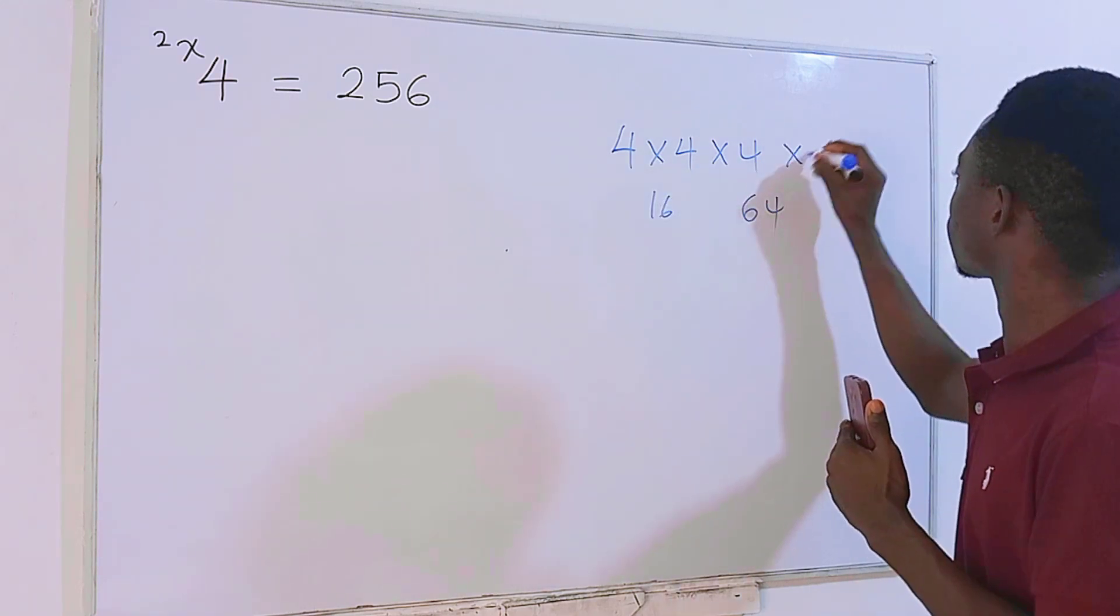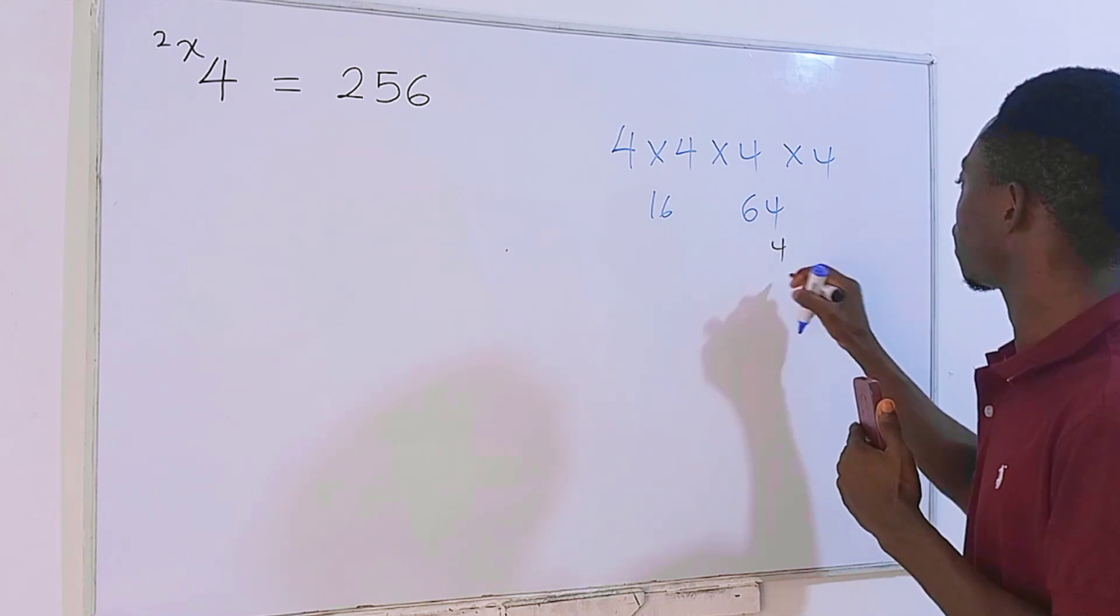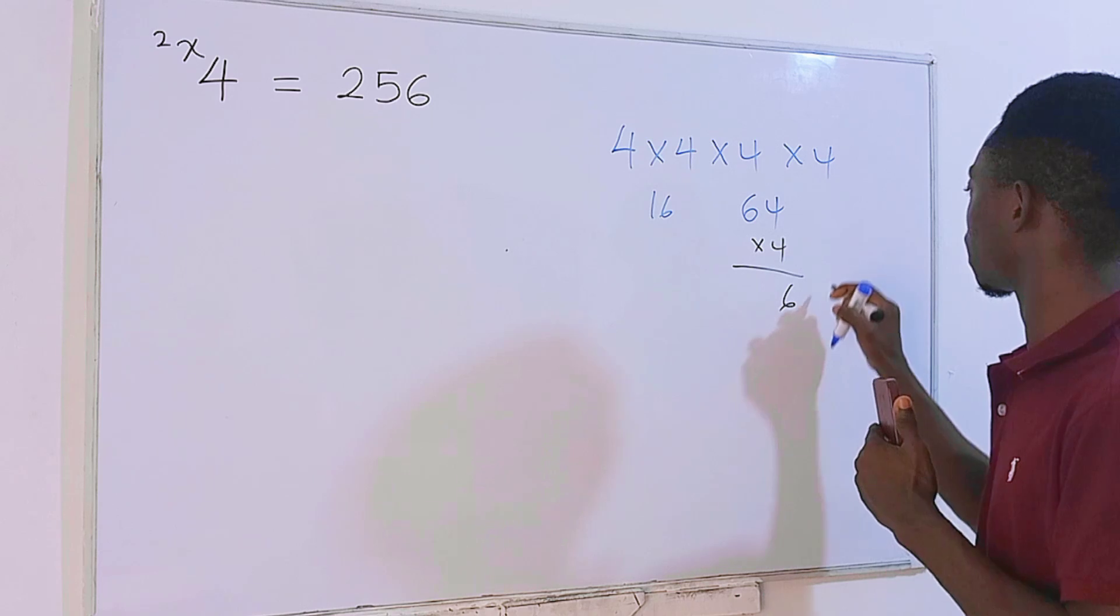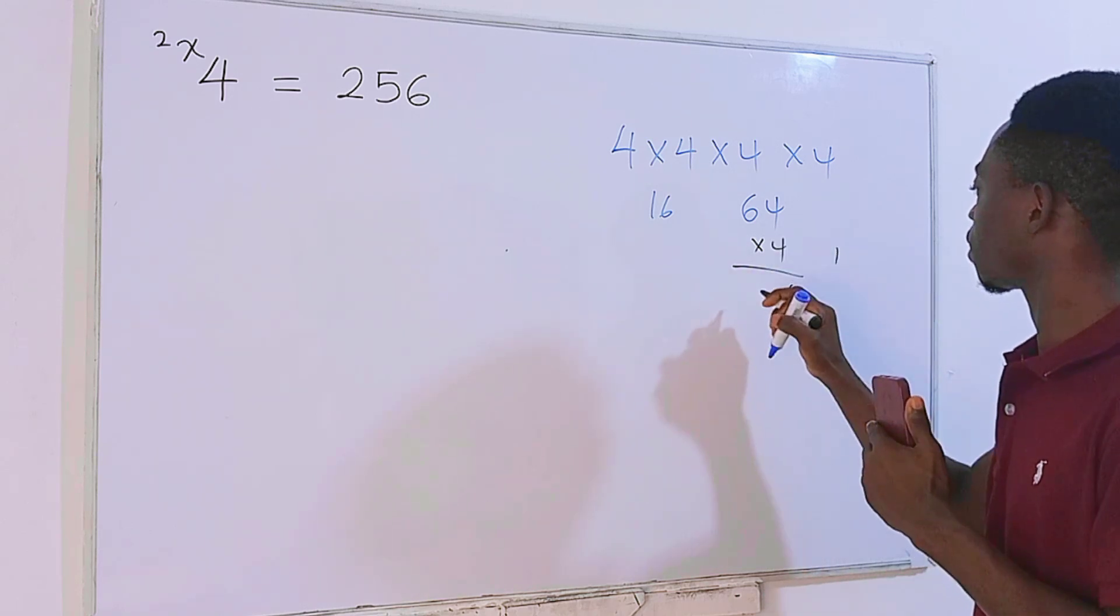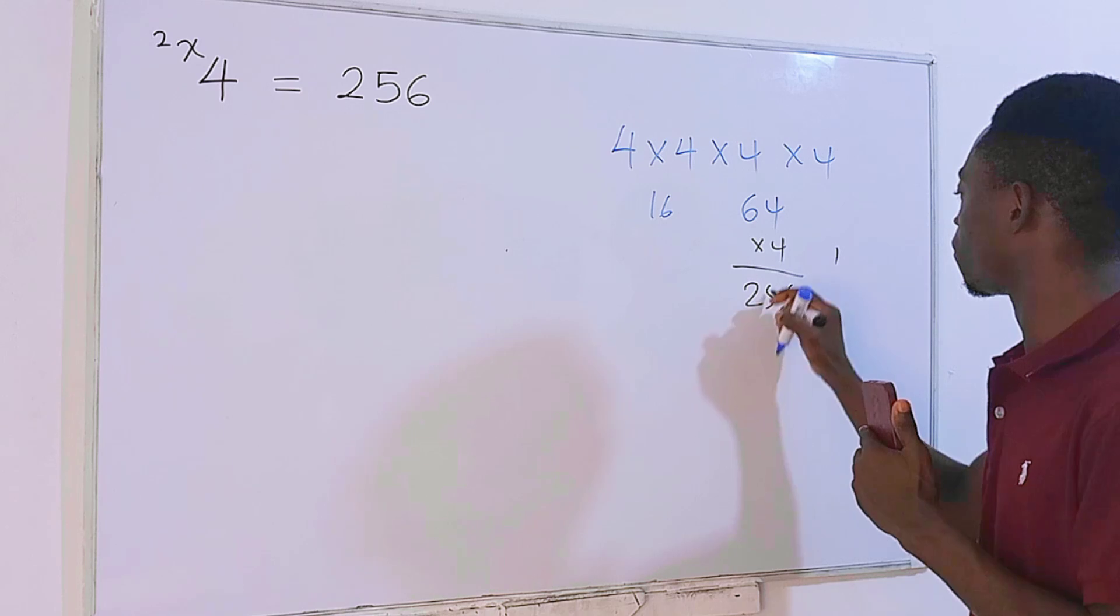So I'll multiply by 4 again. 4 times 6 is 24 plus 1 is 25, and we are there. We're getting 256.